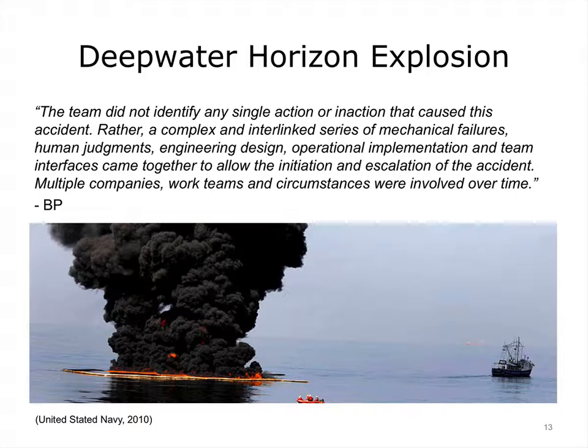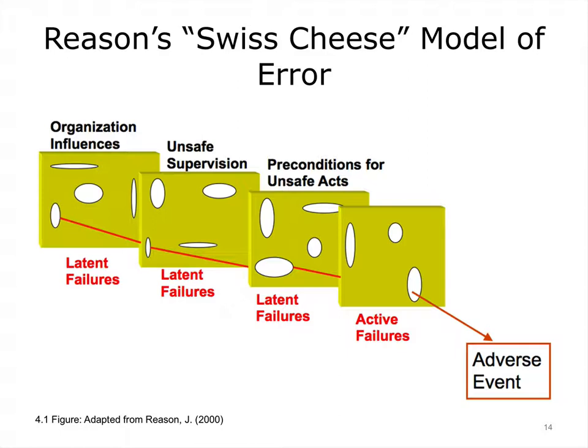James Reason uses a Swiss cheese metaphor to explain the sequence of events or circumstances that lead to errors. The most visible end is the active failure, which may result from someone having committed an unsafe act. However, there is a set of conditions in the form of latent failures that render an organization like a hospital more susceptible to a mishap or adverse event. There are a series of holes just large enough to weaken one's defenses and make circumstances ripe for human error.